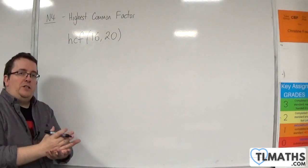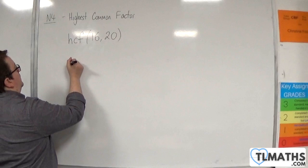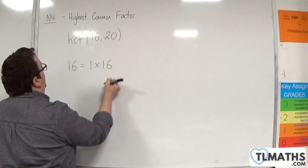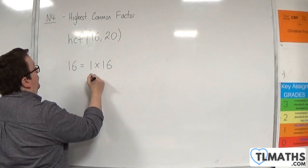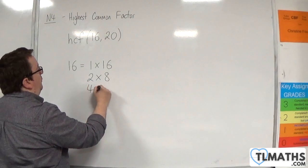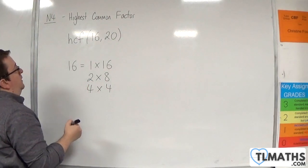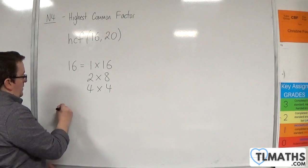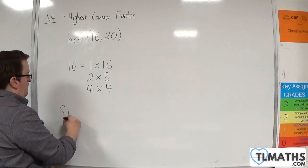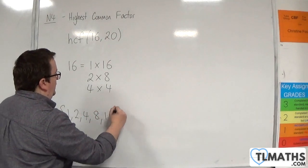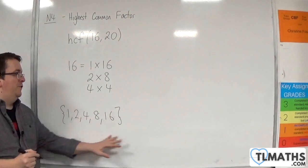So first of all, let's look at the factors of 16. 16 is 1 times 16, and it's also 2 times 8, and it's also 4 times 4. So the factors of 16 are 1, 2, 4, 8, and 16.